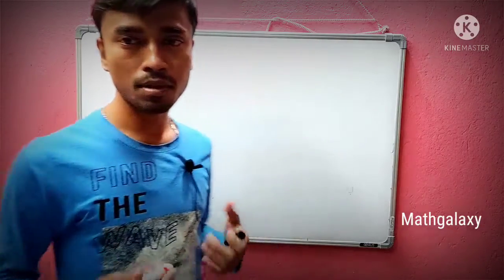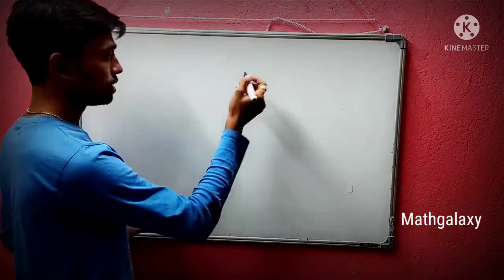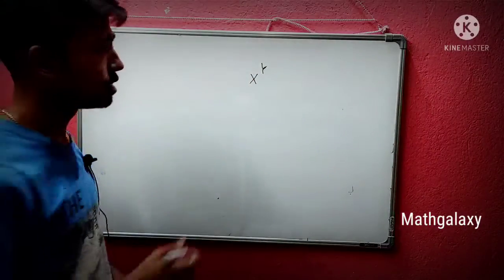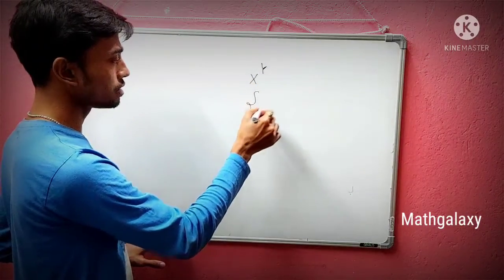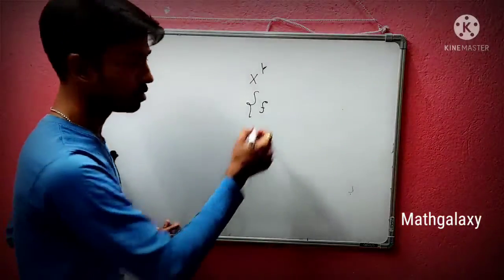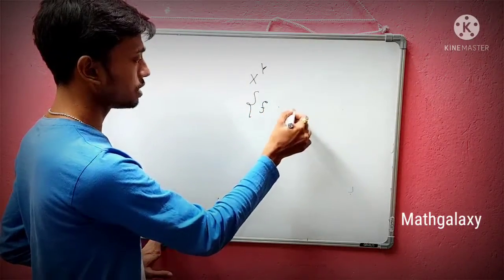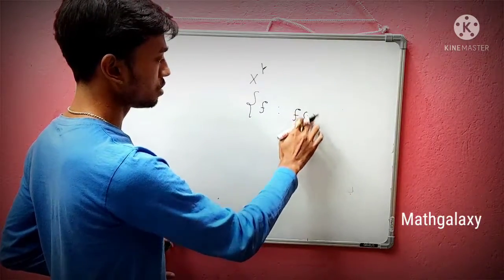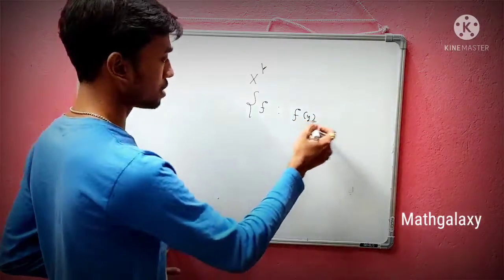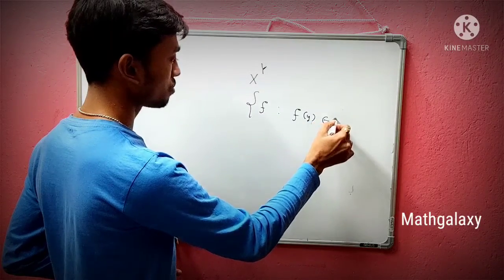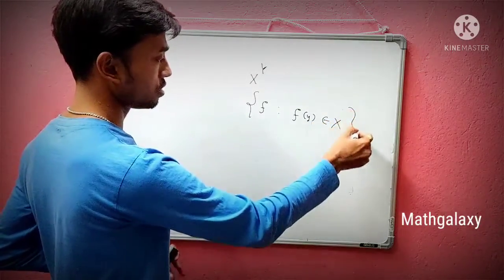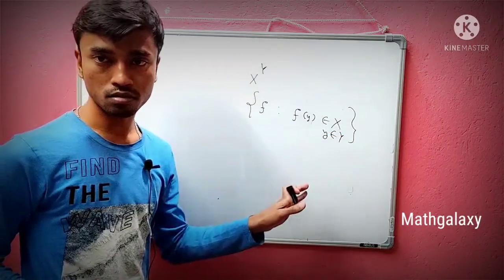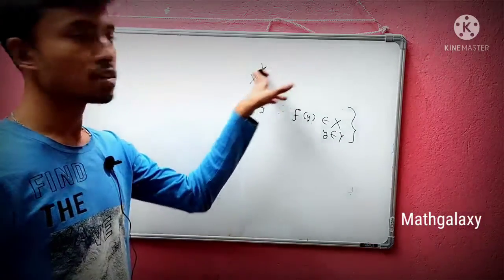First, we have to think about some definitions. Let's talk about X to the power Y. What do we mean by X to the power Y? X to the power Y is the collection of all those functions such that, for all y belonging to Y, the function maps into X.